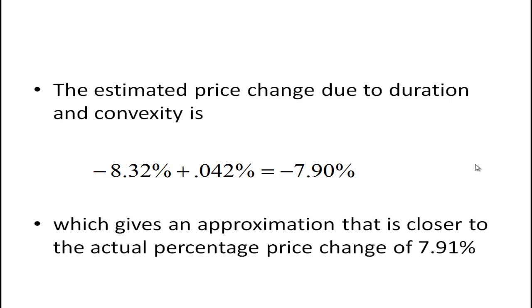That's very close to the actual percentage price change of 7.91%. So if you're going to approximate the change in the price of a bond for large changes in interest rates, you should use convexity to adjust the percentage change and you'll get a much better estimate. For a longer-term bond, the convexity adjustment would be even more critical.